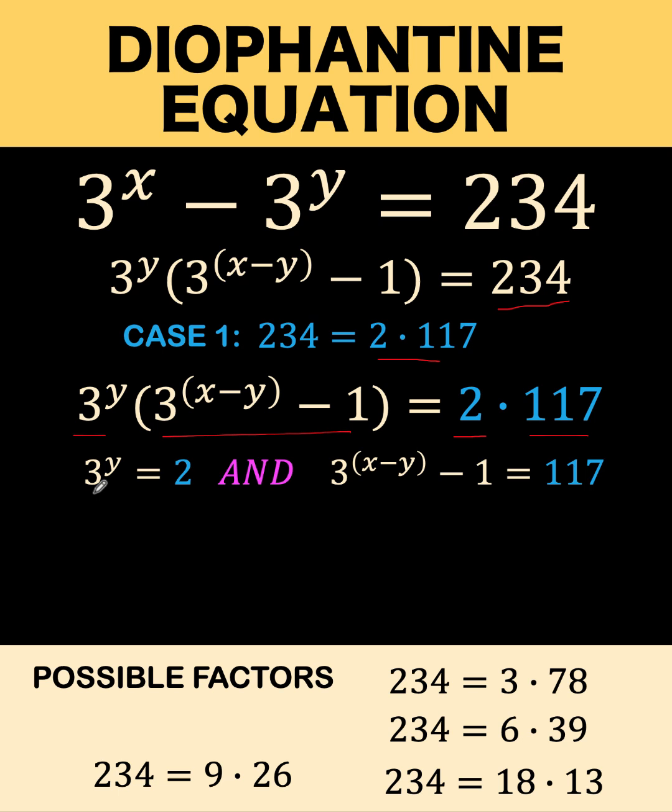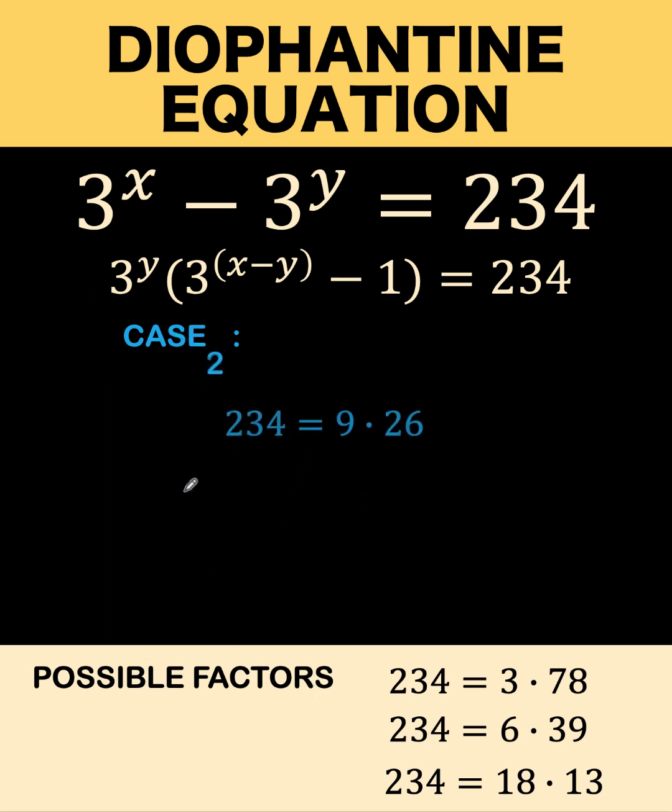Now looking at this expression 3 raised to y equals 2, there is no way for y to be an integer, and 3 raised to that integer would result to 2. And therefore, case number 1 will not give us the solution to this Diophantine equation. So let's proceed to case number 2.